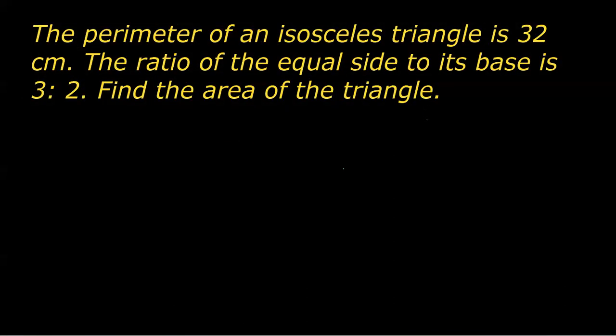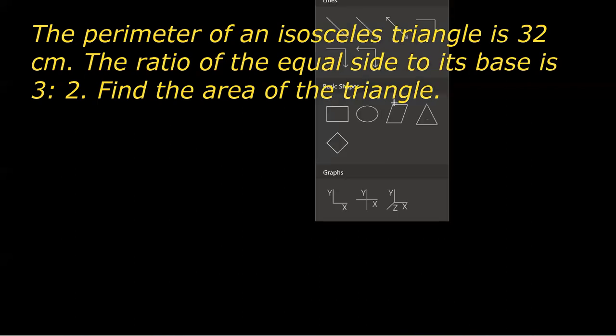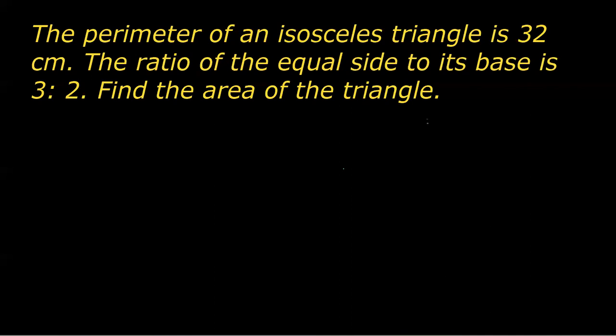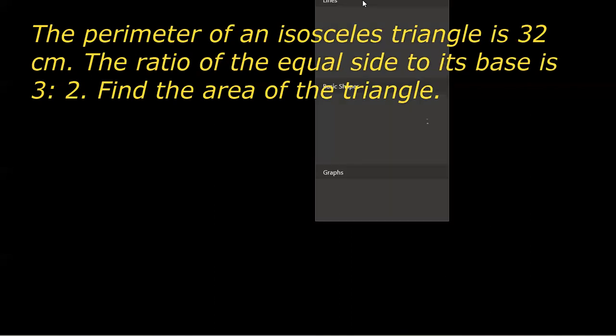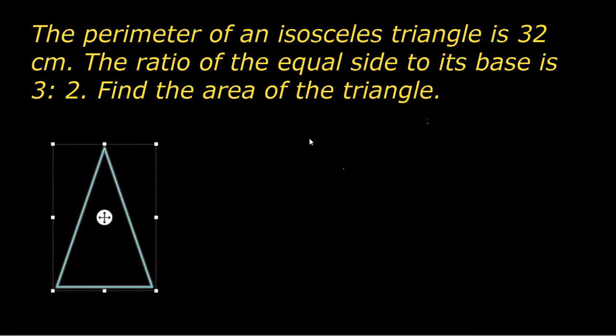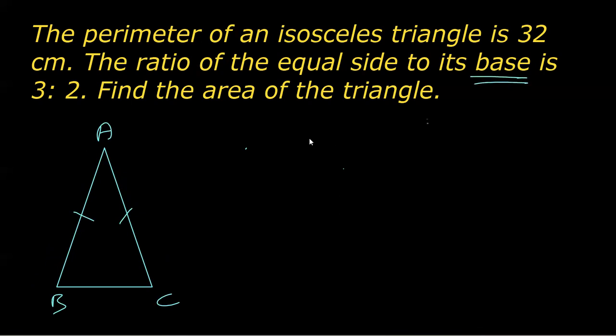So for that, what we are going to do is first make an isosceles triangle. Let's say I have made an isosceles triangle here. What we know in an isosceles triangle is that two of its sides are equal. So clearly these two sides are equal. The non-equal side is the base here.